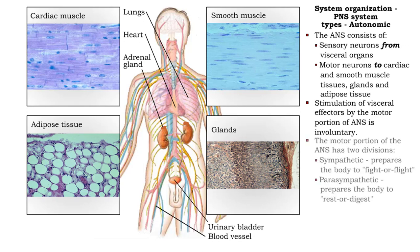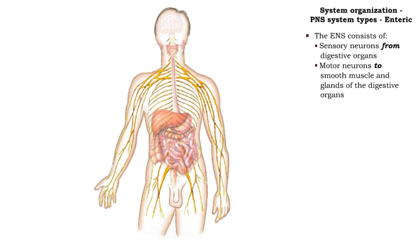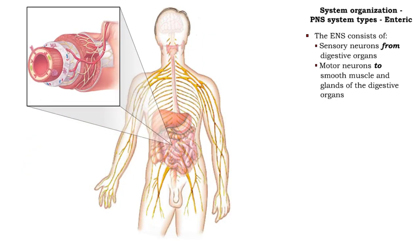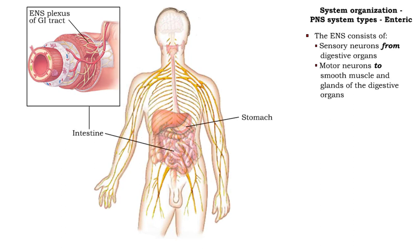Most ANS effectors are governed by opposing divisions of the motor portion of the ANS. The enteric nervous system contains sensory neurons that convey information from digestive organs, as well as motor neurons that stimulate smooth muscular movements and secretory activities of the digestive organs.